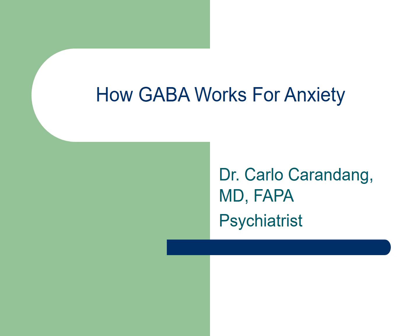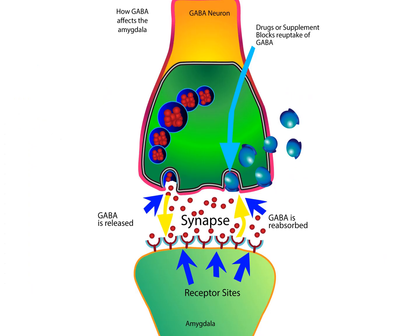GABA is an inhibitory neurotransmitter in the central nervous system. We know that when you have anxiety, you have overactive fear circuits which are centered on the amygdala.